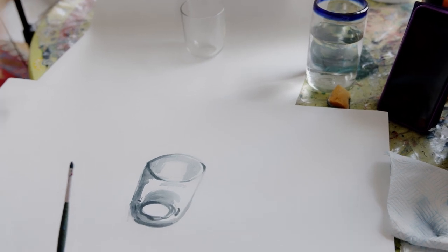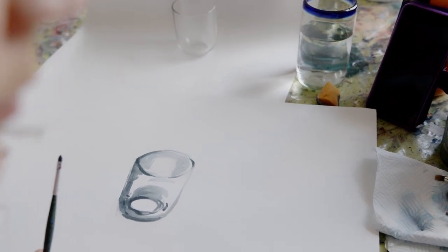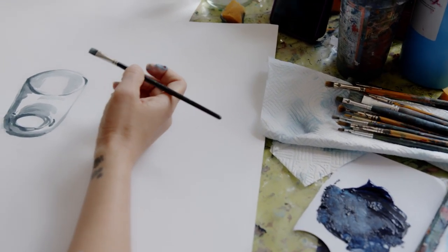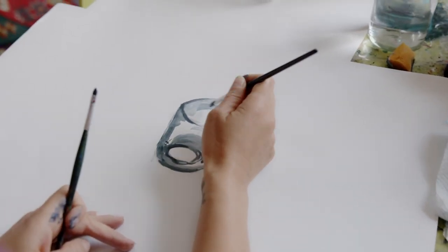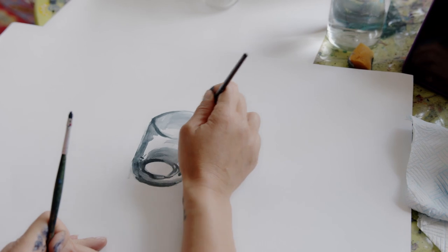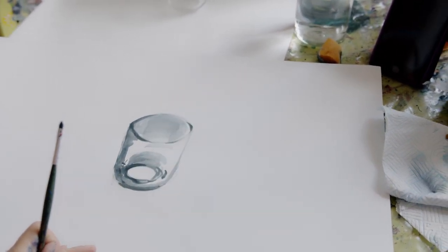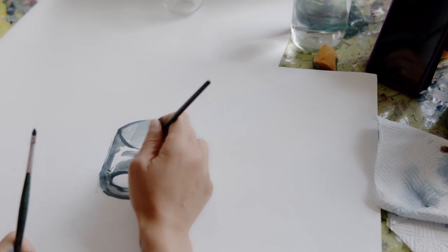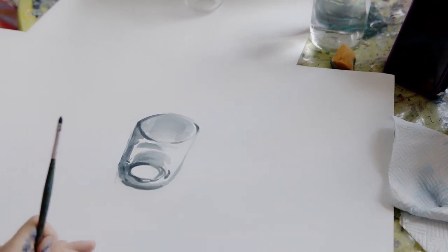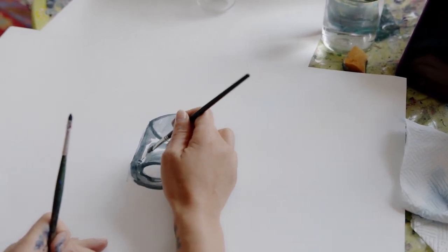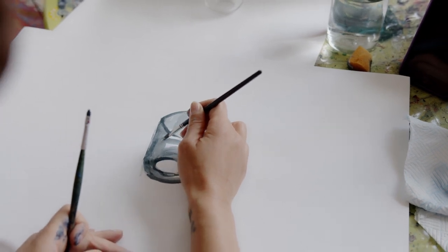Next, I'm going to move on to the lighter gray. So I could use the white of the paper for the lights, but I think it's better if I show you by painting the lights on rather than using the white, so you know how to do it.